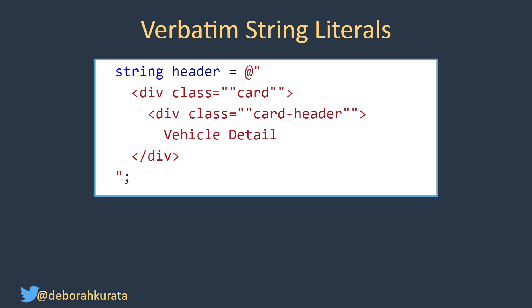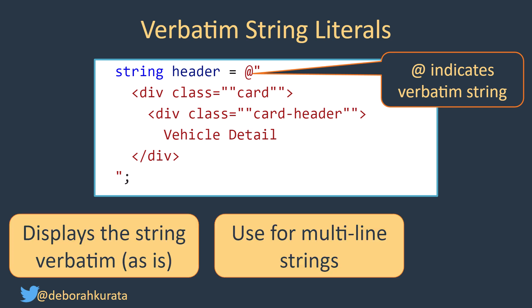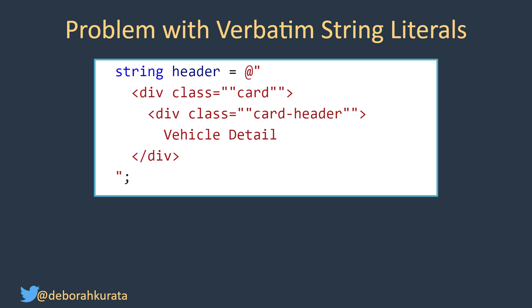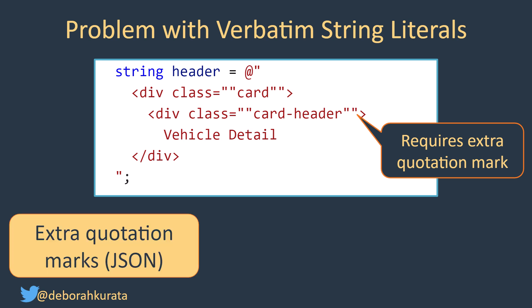Standard quoted string literals are often best for single-line strings with no characters that need to be escaped. For strings that span across multiple lines, we can use a verbatim string literal. We define a verbatim string literal with an at sign in front of the first quotation mark. Verbatim means as is, and is meant to define a multi-line string that displays as is. But once again, quotation marks are a problem. Verbatim string literals require that we use double quotation marks to indicate a quotation mark within a string.